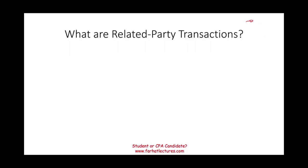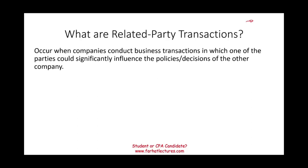When do related party transactions occur? Usually they occur when companies conduct business transactions in which one party can significantly influence the policies and decisions of the other. Simply put, you are buying or selling, conducting some transaction where one party has the power to influence the other party. This happens on a daily basis — a lot of companies are interrelated. One company may own 40, 50, or 60 percent of another, or the CEO sits on the board of directors of another company. We have to be aware of those, know what they are, and know what to do as auditors.